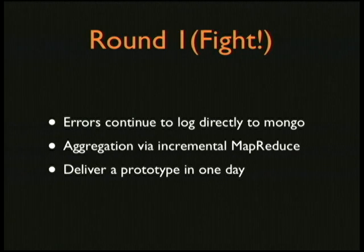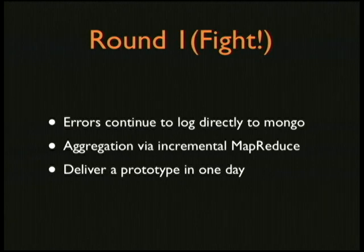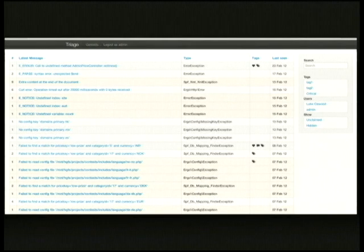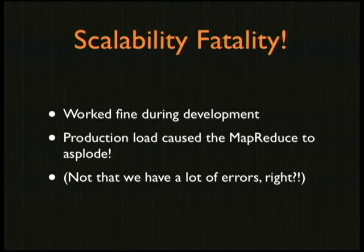We continued logging to Mongo but then had the issue of aggregation — we wanted to collapse that massive feed of garbage into single data points. We attempted to use Mongo's MapReduce in-request. Since we were logging directly to the DB, we had no other hook point. We did it in a day and this was the result, with some Twitter Bootstrap love. You can see it's aggregating on the left-hand side with some tagging and claiming functionality — and that was in February.